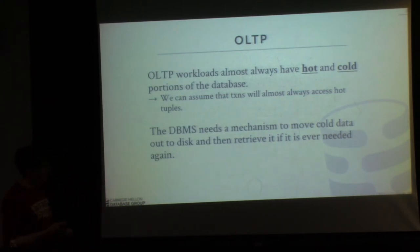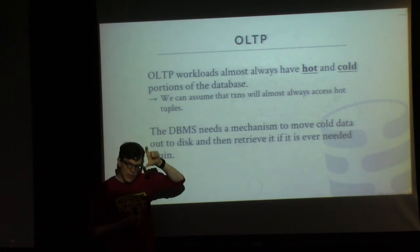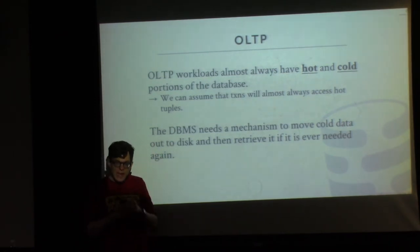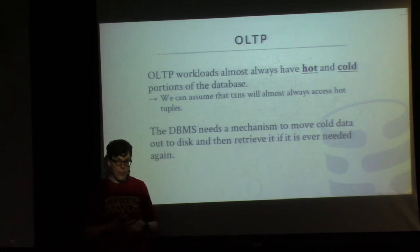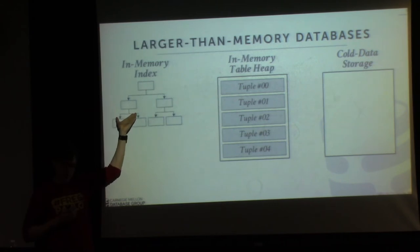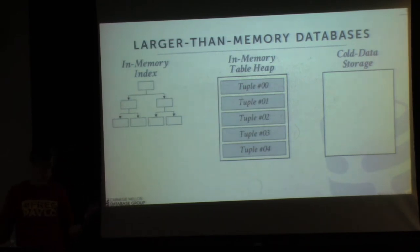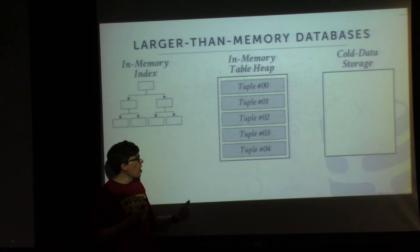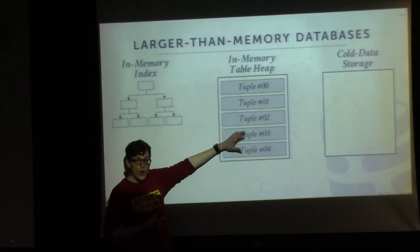We need a mechanism or component that takes data out of memory and puts it on disk, maintains metadata about what's actually stored there, and if any transaction or query tries to access that, knows how to go fetch it and bring it back into memory. For this lecture, we're going to ignore the problem of moving the index out to disk — even though indexes can be 50% of the total database size in memory. We'll assume the index is always in memory and focus only on moving tuples out to disk.